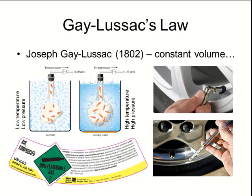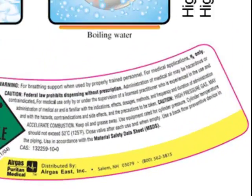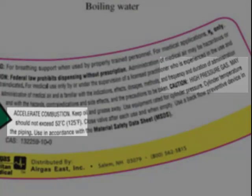You may also have read the warning labels that are on aerosol containers or other containers containing compressed gases. The label says caution, high pressure gas. Cylinder temperature should not exceed 52 degrees Celsius or 125 degrees Fahrenheit.